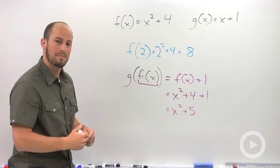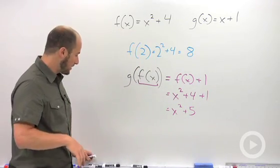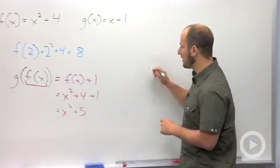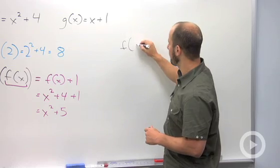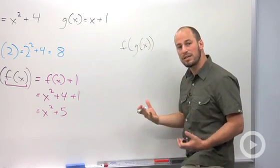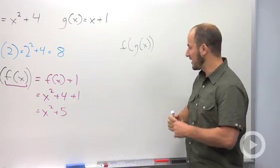We could go the other way as well. So say I come over here, we have a little bit more space. Say f of g of x. So here what we're doing is we are taking g of x, this inside, and plugging it into f.